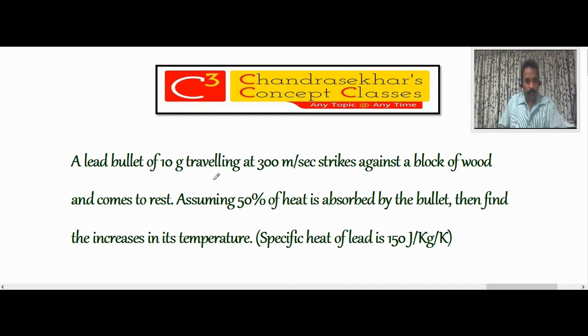A lead bullet of 10 grams traveling at 300 meters per second strikes against a block of wood and comes to rest. Assuming 50% of heat is absorbed by the bullet, then find the increase in its temperature. Specific heat of lead is 150 Joules per kilogram per Kelvin.